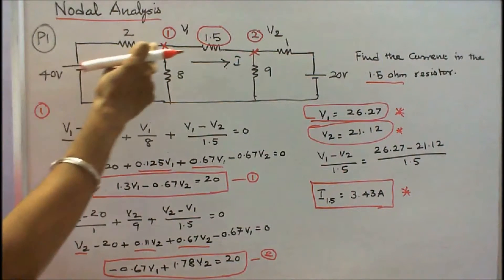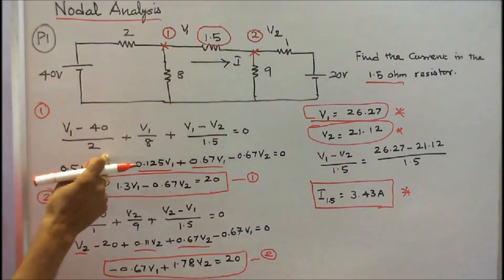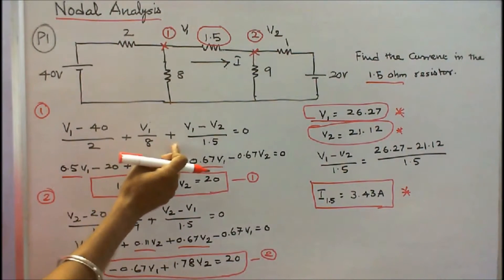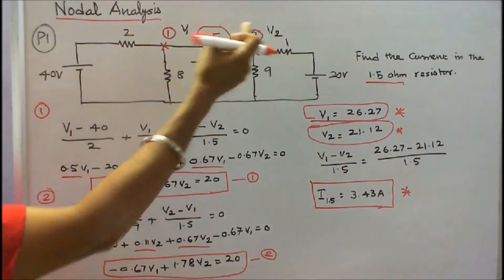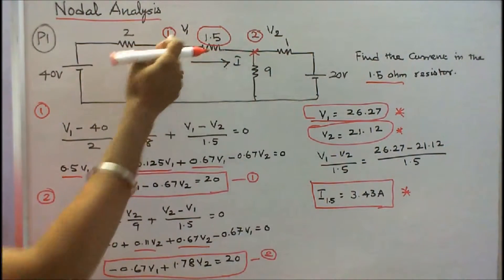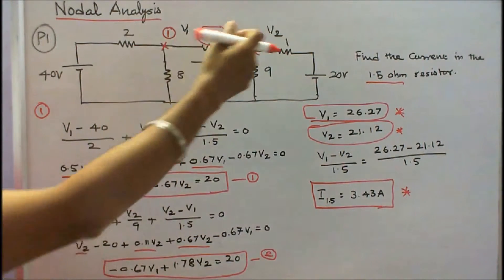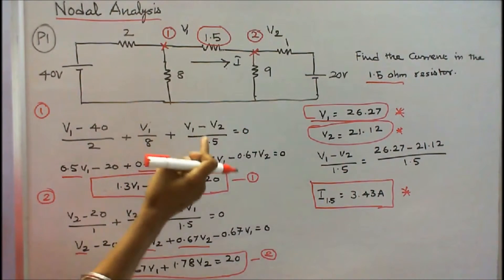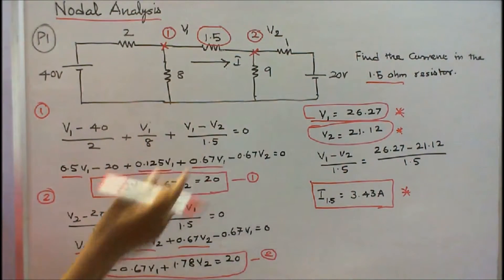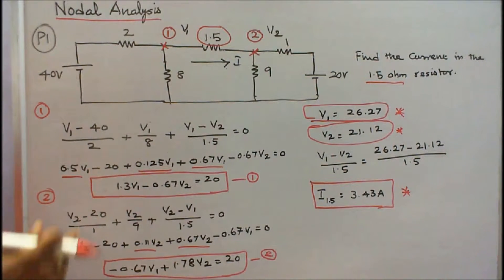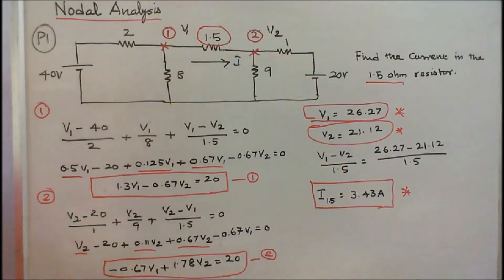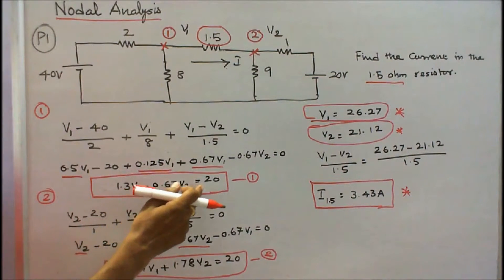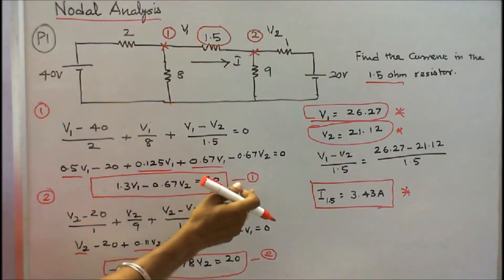At node 1: (V1 minus 40) divided by 2, plus V1 by 8, plus V1 minus V2 divided by 1.5, is equal to 0. Here V1 is considered as higher potential and V2 as lower potential. Simplifying the equation gives: 1.3 V1 minus 0.67 V2 equals 20. This is equation 1.